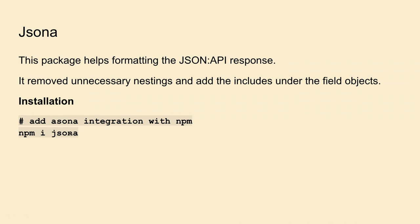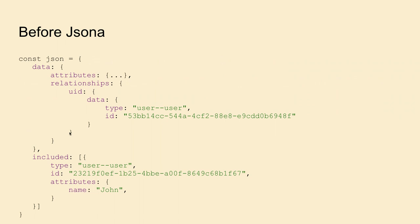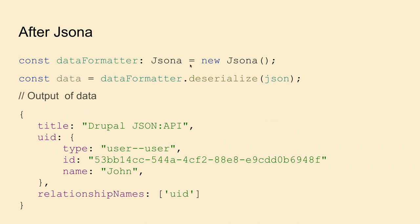Another package I used is `jsonapi-fractal` (JSON-A), which formats the response from Drupal by removing unnecessary nesting and flattening includes under the field object. Instead of a complex structure where you have data, attributes, relationships outside attributes, and includes as separate objects — requiring you to iterate through includes, check types, and match UUIDs — you use `jsona.deserialize()` and get back a flat object: title, then the `uid` field contains the full user object with type, ID, and all user fields directly.